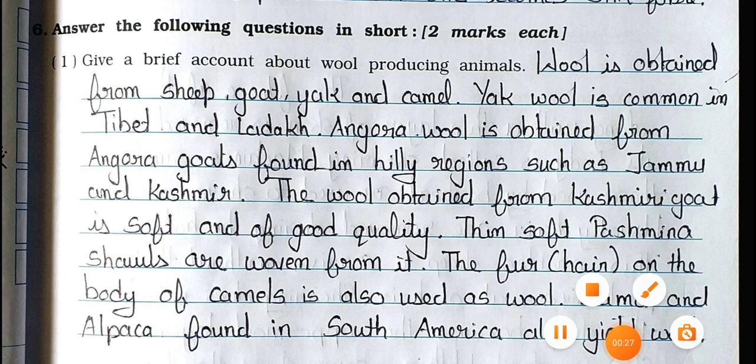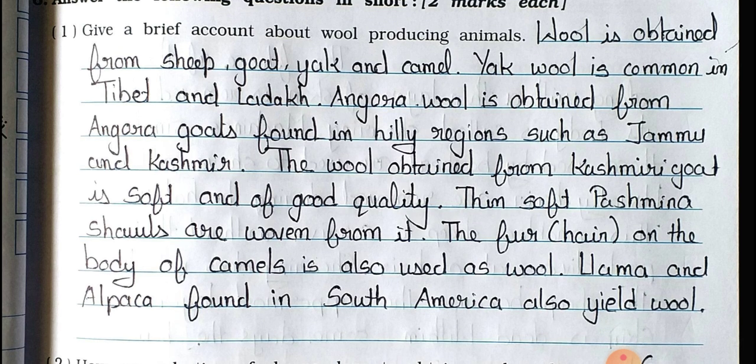Give a brief account about wool-producing animals. Answer: Wool is obtained from sheep, goat, yak, and other animals. Yak wool is common in Tibet and Ladakh. Angora wool is obtained from Angora goats found in hilly regions such as Jammu and Kashmir. The wool obtained from Kashmiri goat is soft and of good quality. Thin, soft pashmina shawls are woven from it. The fur, meaning hair, on the body of camels is also used as wool. Llama and alpaca found in South America also yield wool.